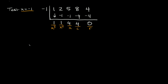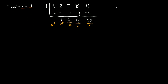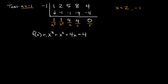So we know that x is equal to 2 and x is equal to negative 1 so far. We're going to write this out with our leading coefficients and terms. So 1x cubed is just x cubed, then we have plus x squared plus 4x plus 4. This is now our function, and it's finally at a point where we can actually factor it somewhat easily using grouping.